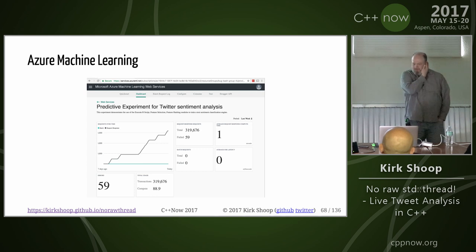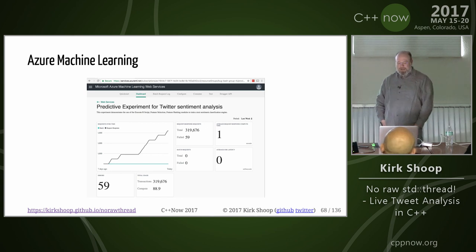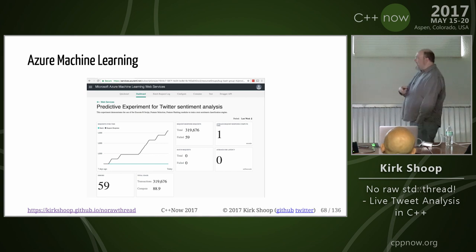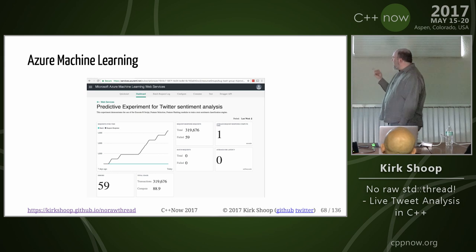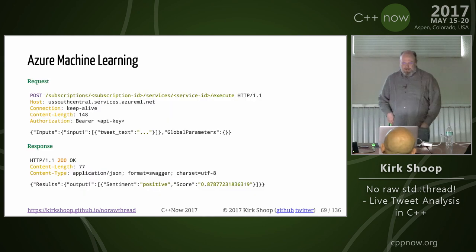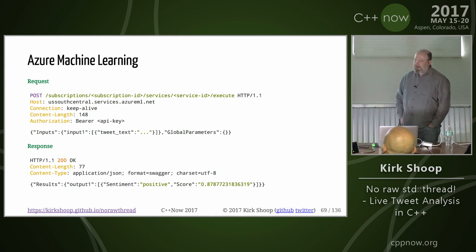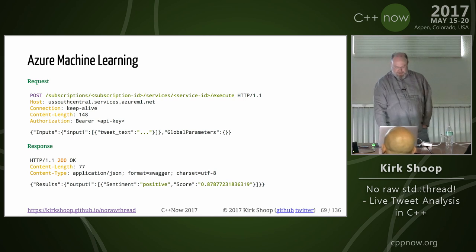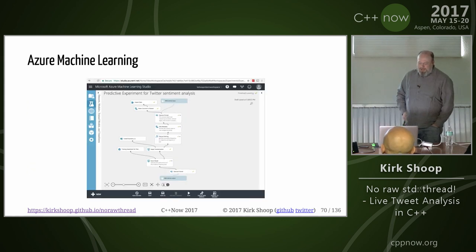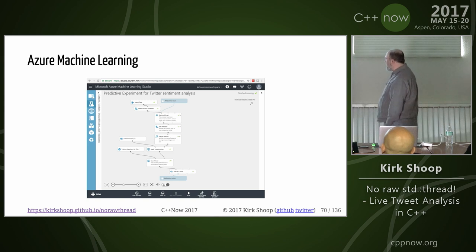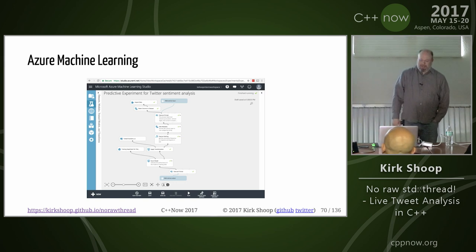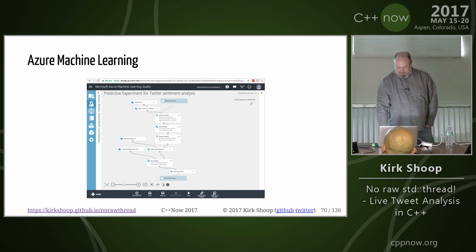This is actually my current project at my team — we're looking at the calls made to the Twitter sentiment analysis service by my application. I built this service to do the Twitter sentiment analysis. This is the request-response to the published web service. This is how you build it — it's a GUI graph, but you can put things like 'Execute R script' and 'Execute Python script', so you don't have to live in the GUI. In the end you can publish a web service directly from it, which is what I did.